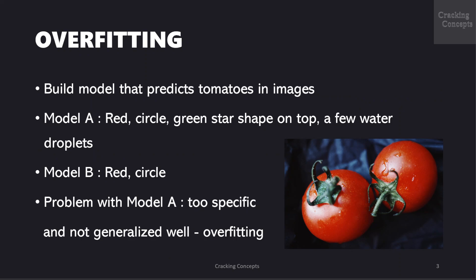Now let us see an example to understand this better. Assume that we are trying to build a model that predicts tomatoes in images. Model A is red, circle, green star shape on top and a few water droplets. Model B is red and circle.